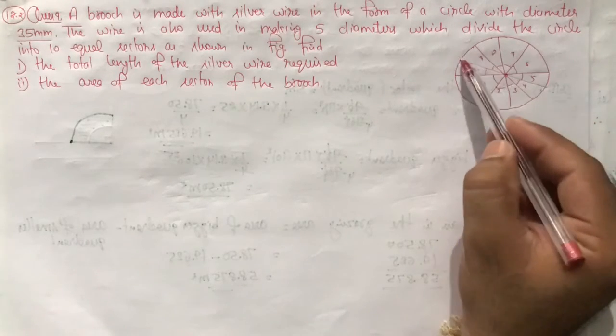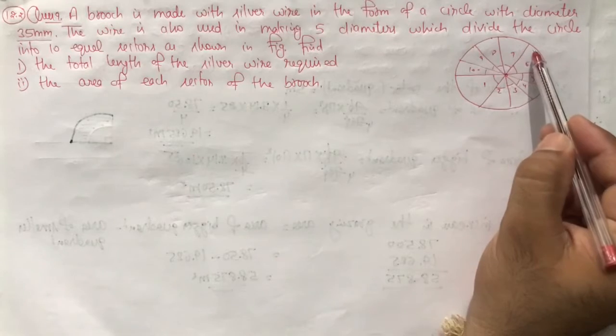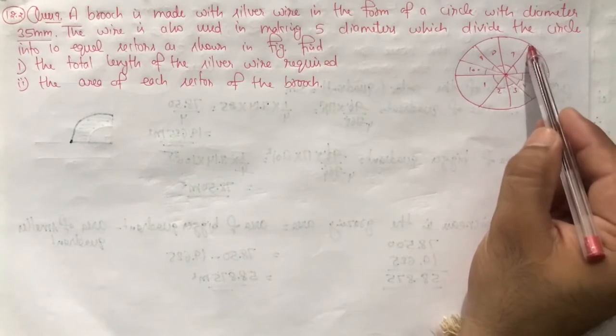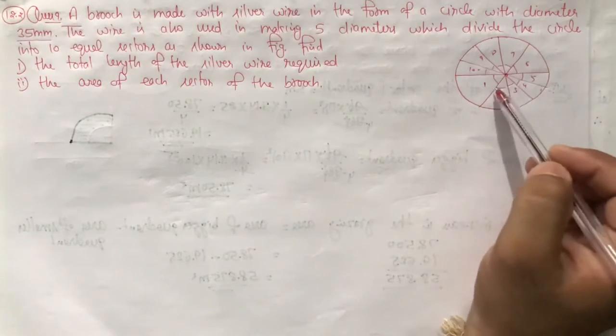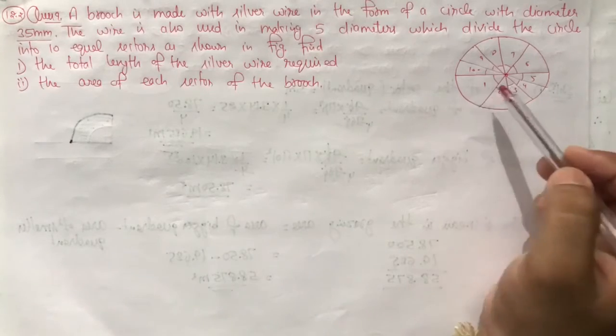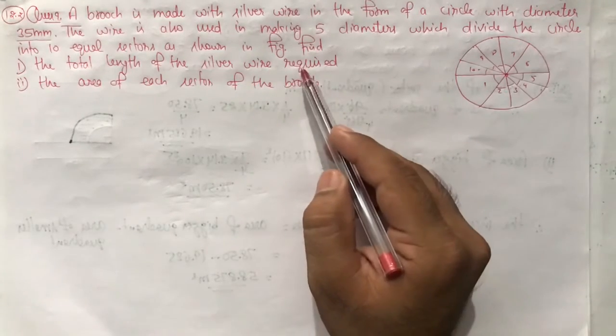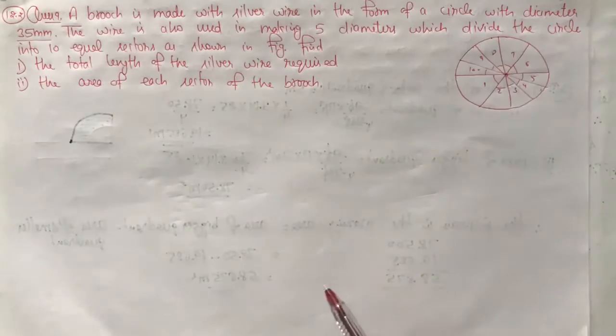First of all, you will find the circumference of the circle. After that, if we add the length of these 5 diameters to the circumference, then we will have the total length of the silver wire which was required.